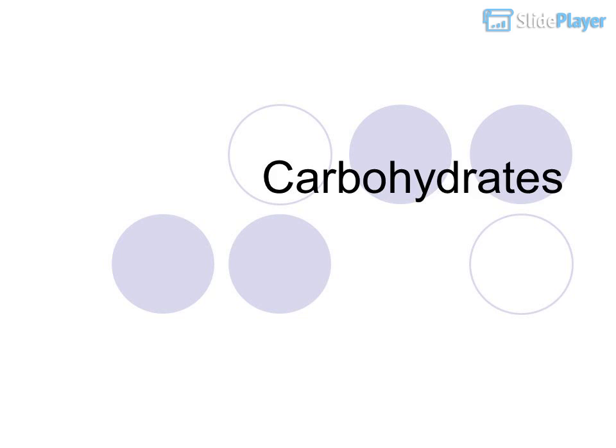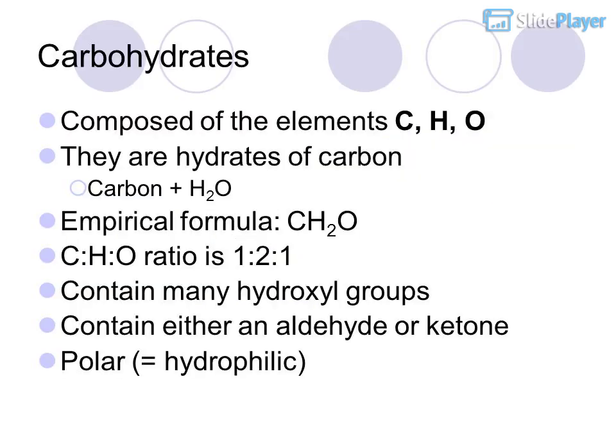Carbohydrates are composed of the elements C, H, and O. They are hydrates of carbon — carbon plus H2O. Their empirical formula is CH2O, with a C:H:O ratio of 1:2:1. They contain many hydroxyl groups and either an aldehyde or ketone group. Because of this, they are polar and hydrophilic.